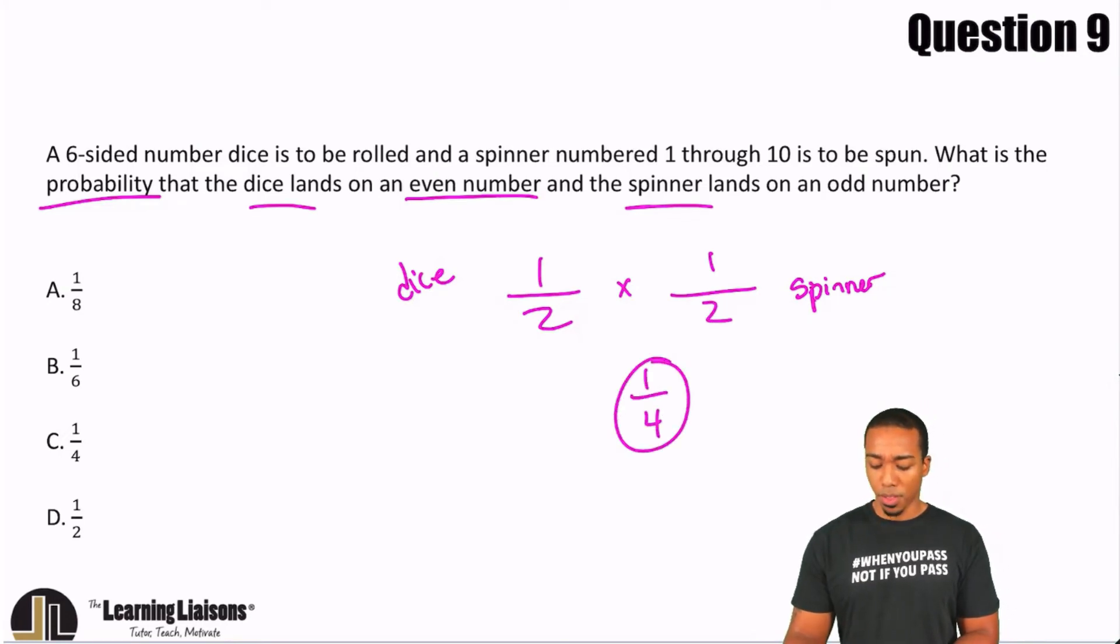Multiplying, we get 1 fourth, giving us C as the answer choice. So I'm hoping that makes a little more sense there, because sometimes you don't have to actually lay everything out and draw everything and circle everything. Once you get the hang of this, you'll understand that if they say even, and the numbers are essentially consecutive, well, then it's going to be half. Unless they say it's 3 numbers and 5 numbers, not an even amount.